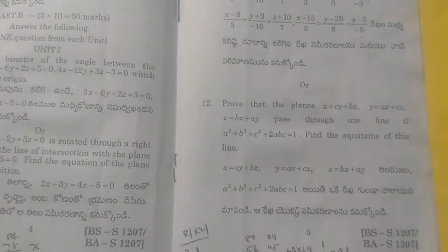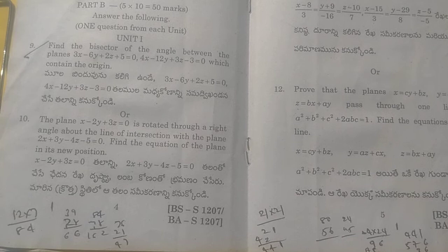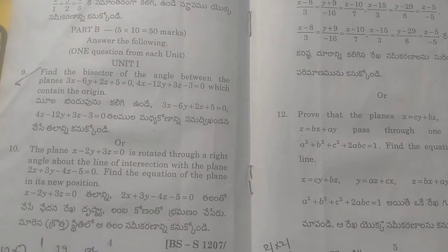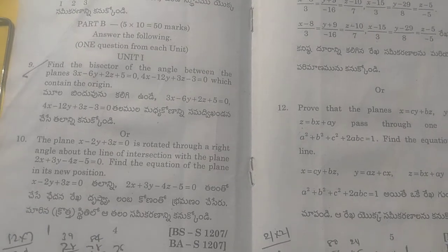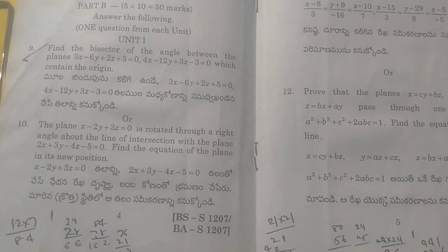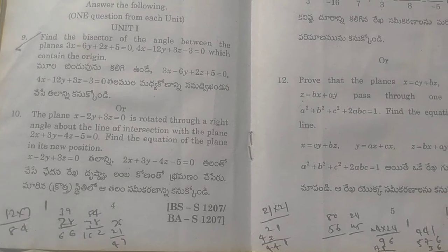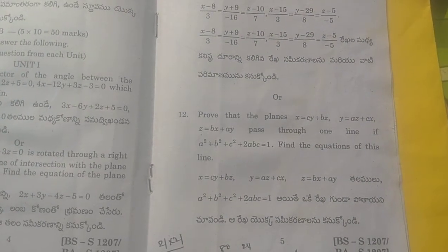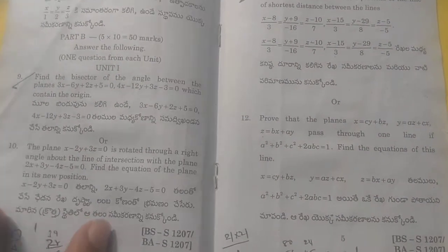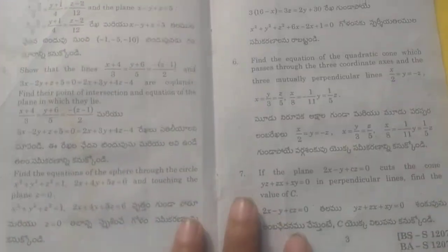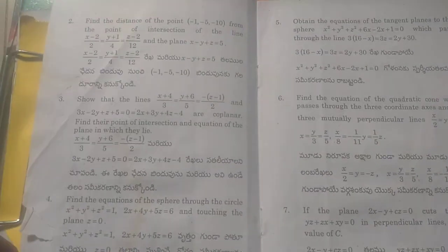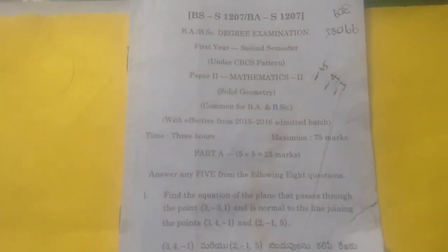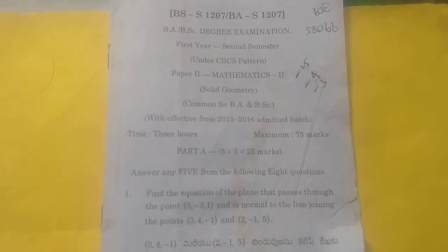Friends, this is easy. Short distance between the lines, Friends. This is the same. First, the bisectors between the planes. This is the same. Friends, if you want to choose, we can use the same. We can use the same. If you want to use the same, Friends, this is the same.